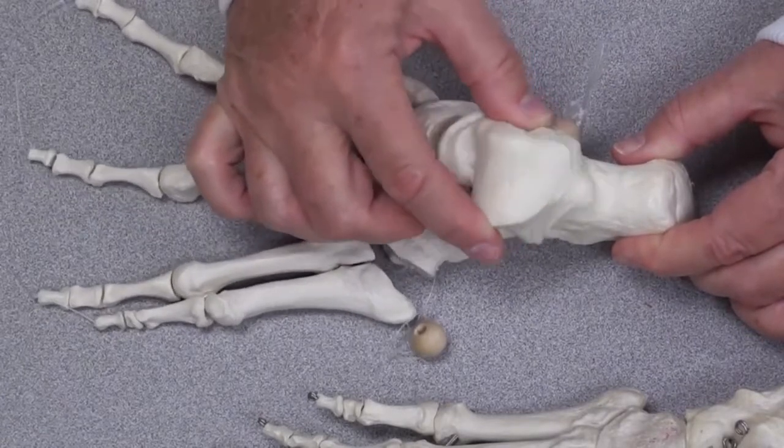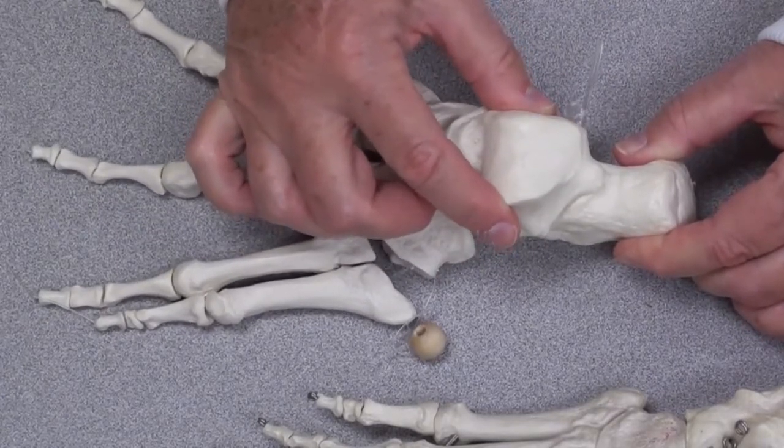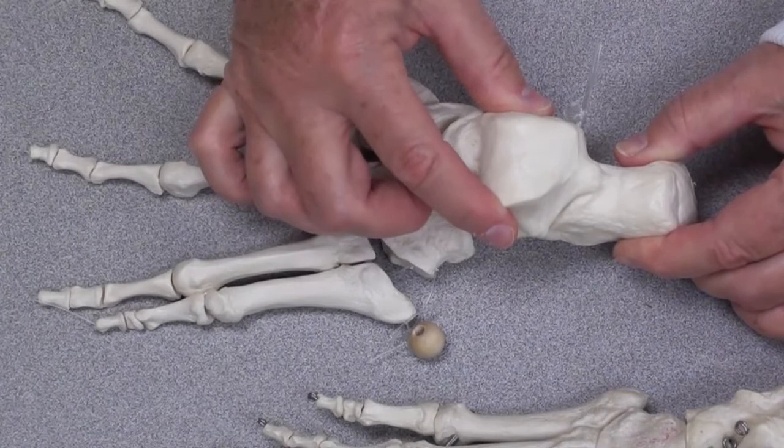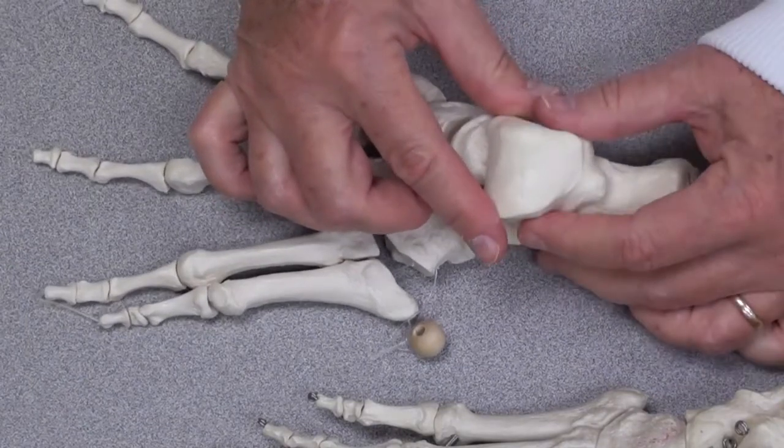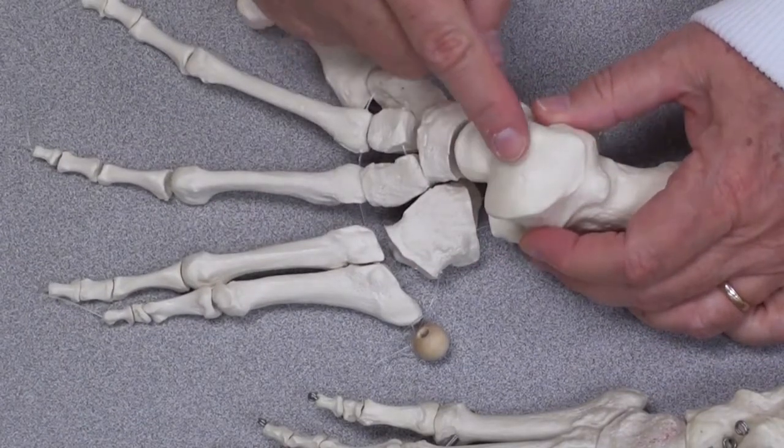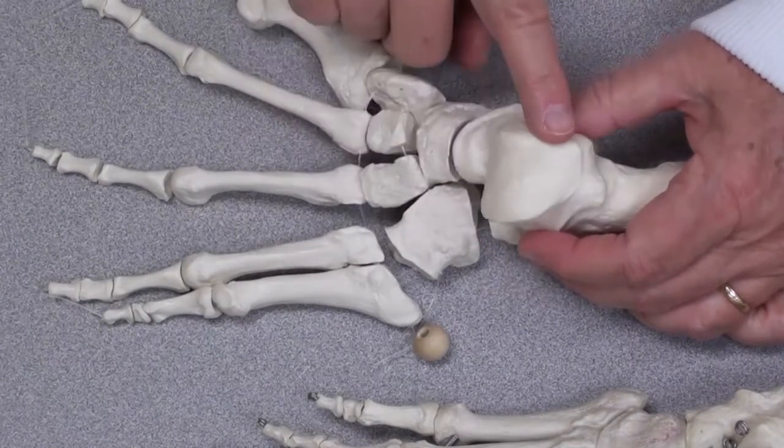The talus forms a joint with your leg because it forms a joint with the tibia and fibula. So the ankle joint really contains three bones, fibula and tibia.